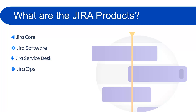Jira Service Desk is used for support projects. Using Jira Service Desk, you can give a better experience to your customers — they can easily ask for help and your agents can respond faster and more effectively. Jira Ops is an incident management tool used to centralize alerts and notify the right people at the right time. These are the four products under the Jira platform.